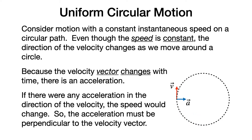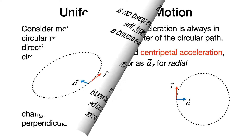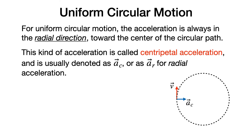As the velocity vector goes around the path, the acceleration vector always points towards the center of the circular path. Why towards the center instead of directly away? If you look at the motion of the velocity vector, and let a small amount of time change, the acceleration vector must be pointing inward towards the center of the circular path. This kind of acceleration is called centripetal acceleration and is usually denoted with a vector a sub c or a vector a sub r for radial acceleration.